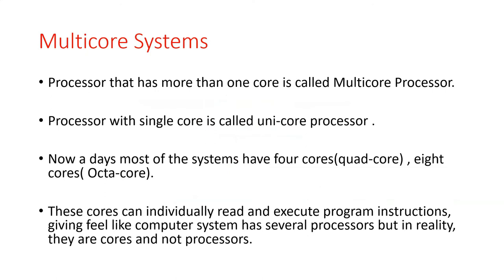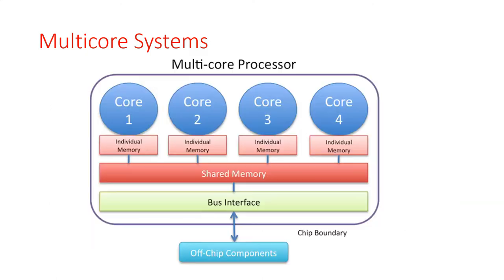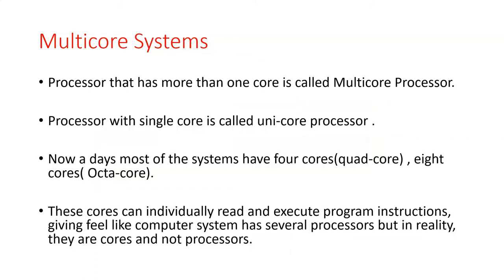Let us start this video with multi-core systems. Observe this diagram. There are different cores connected with one single processor. A processor that has more than one core is called a multi-core processor. A processor with a single core, we normally call it a unicore.